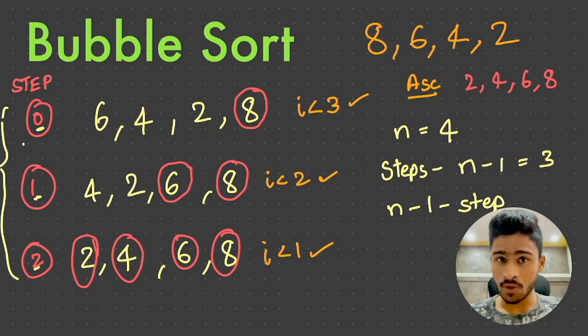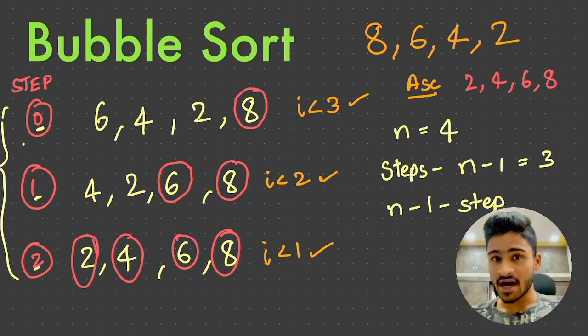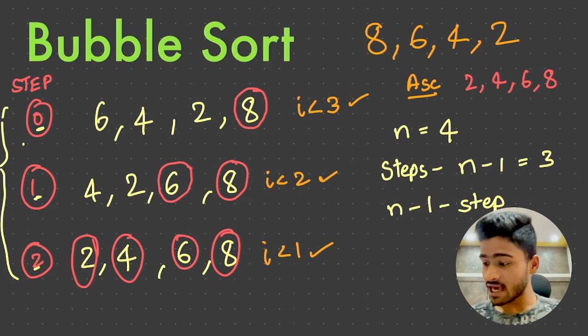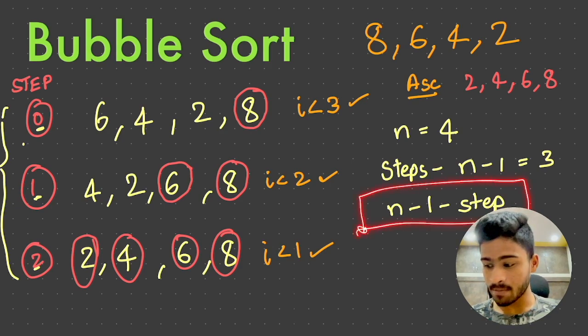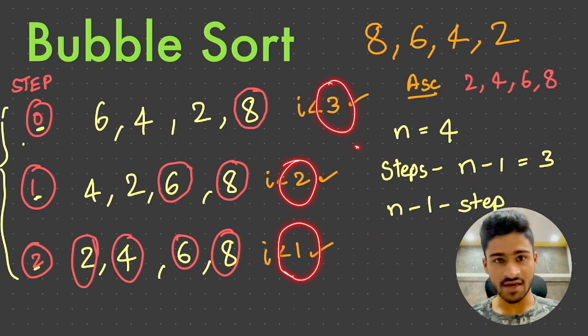And inner loop. So i equal 0, i less than n-1 minus step. Steps should go from 0 to n-1. This is the value decrease and high value decrease.